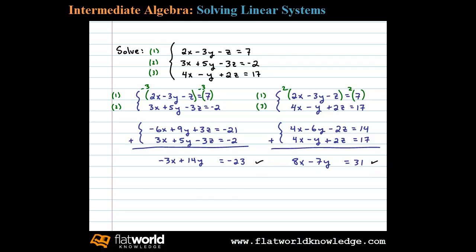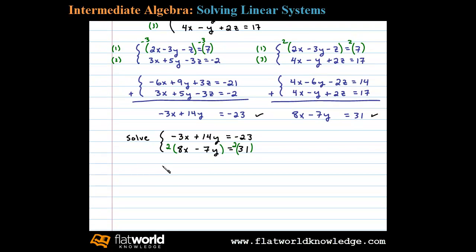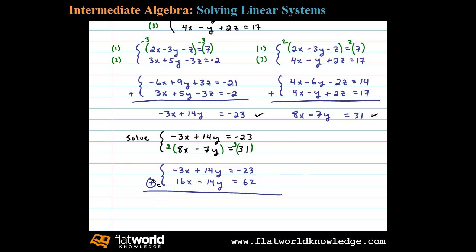We can solve the resulting linear system by elimination. We can eliminate the variable y if we multiply both sides of the second equation by 2. That'll leave us with an equivalent system where the second equation is 16x minus 14y equals 62.